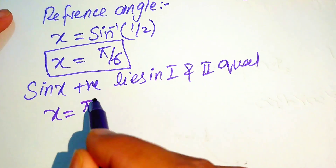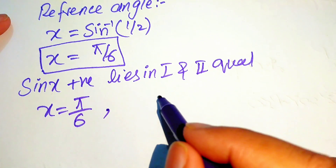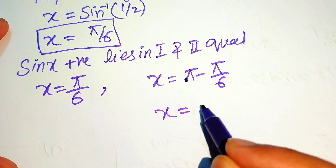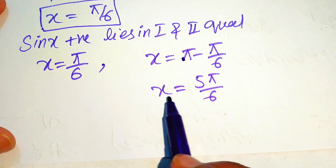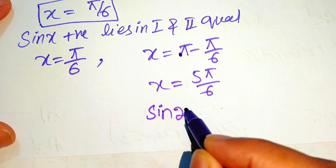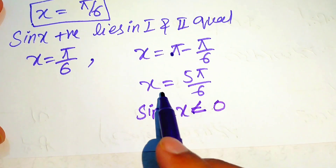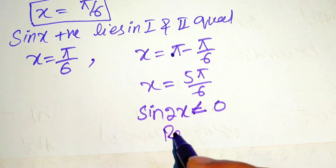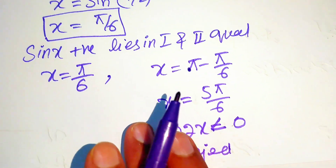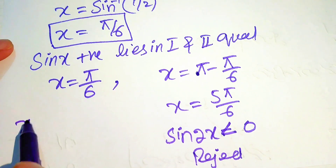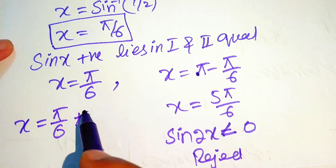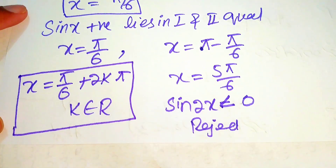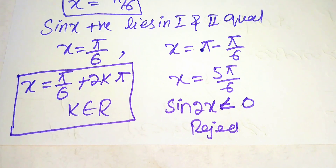In the first quadrant, x = π/6. In the second quadrant, x = π − π/6 = 5π/6. However, if x = 5π/6 then sin 2x < 0, meaning a side length would be negative — which is impossible, so we reject x = 5π/6. Therefore the only solution is x = π/6, and in general form: x = π/6 + 2kπ, where k belongs to the integers. Thank you for watching — please subscribe for more videos.